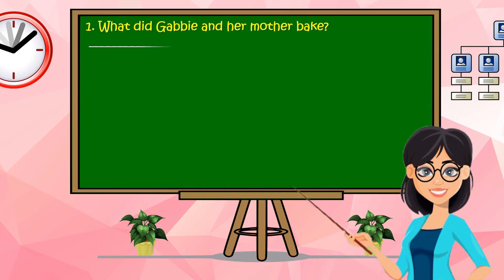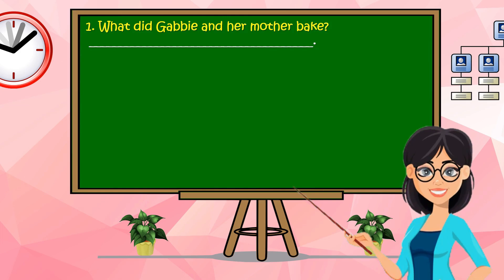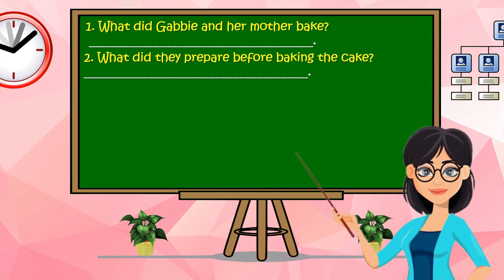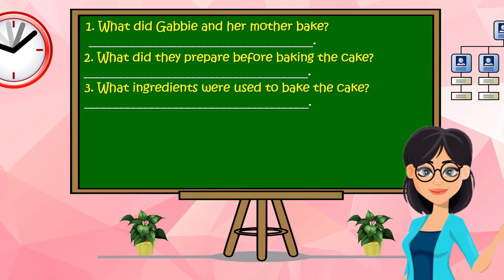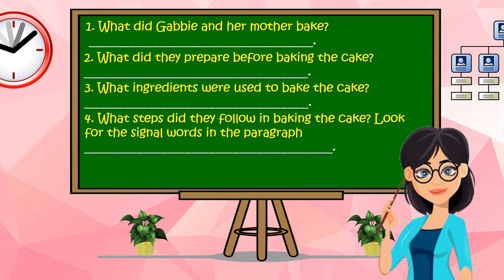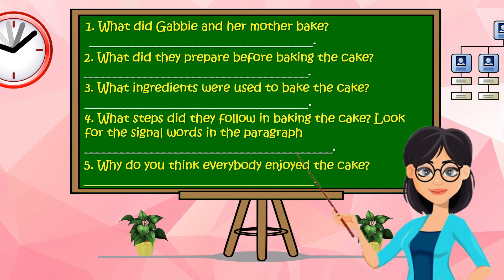What did Gabby and her mother bake? What did they prepare before baking the cake? Number 3: What ingredients were used to bake the cake? Number 4: What steps did they follow in baking the cake? Look for the signal words in the paragraph. Number 5: Why do you think everybody enjoyed the cake?